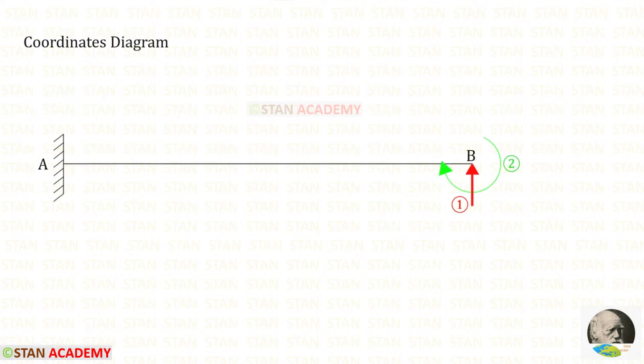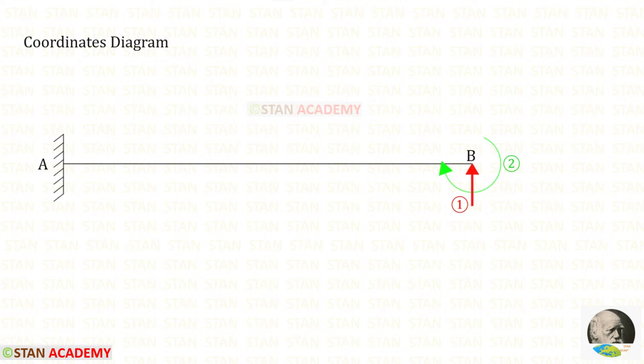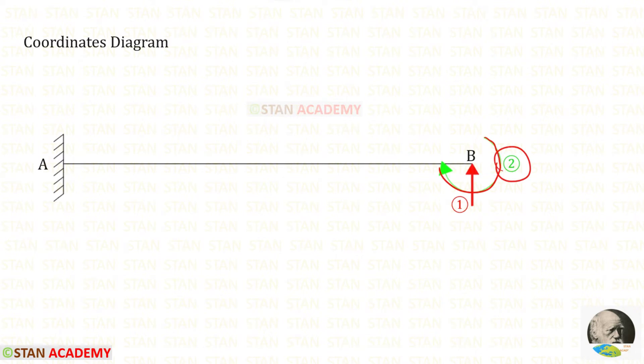Now let us make the coordinates diagram — this is only for reference. In this analysis there are two coordinates: the vertical reaction RB and the moment MB. We are keeping them as coordinates because these are the ones we removed. Let us keep RB as the first coordinate and moment MB as the second coordinate. Let us assume that MB is acting in the clockwise direction; if we get a negative value, we can change the direction.